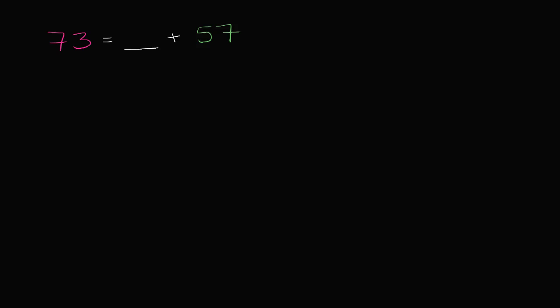Let's say someone walks up to you on the street and says, quick, 73 plus blank is equal to 57. What would blank be? Well, there's a couple of ways to think about it. Blank is essentially what you have to add to 57 to get to 73. It's the difference between 57 and 73.